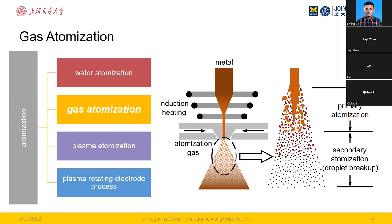Looking more closely at the atomization process, it can be divided into two stages: primary atomization and secondary atomization. In primary atomization, the liquid column breaks into millimeter-sized liquid sheets or large droplets. In secondary atomization, the millimeter-sized droplets break further into micro-sized fragments. This is also why secondary atomization is sometimes called droplet breakup — it mainly deals with breaking millimeter-sized droplets into micro-sized fragments, which is today's focus.